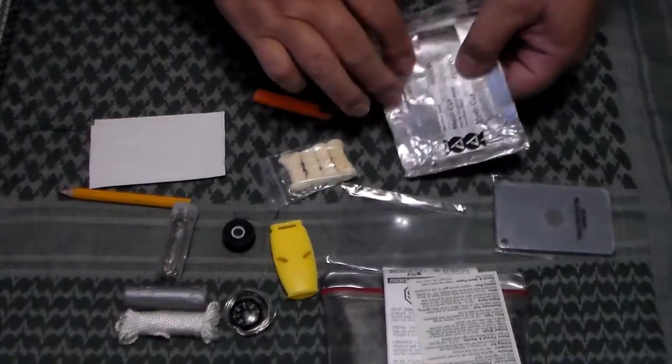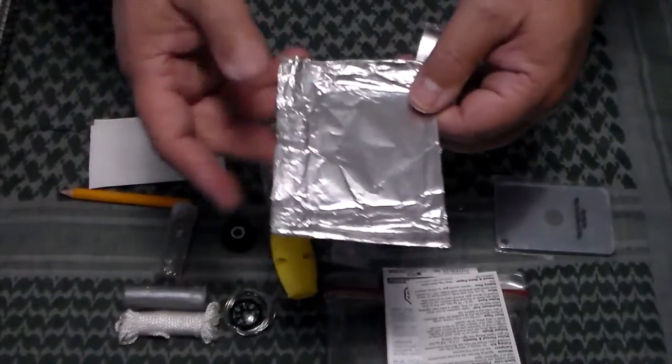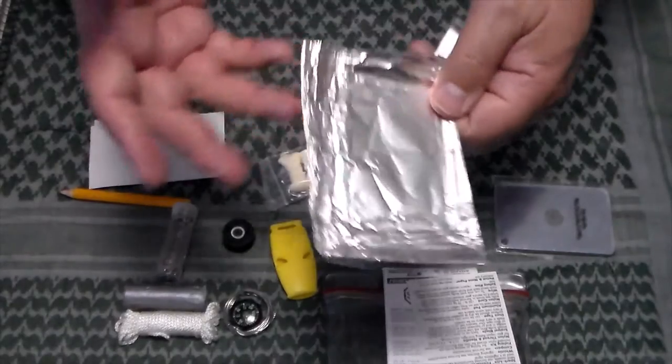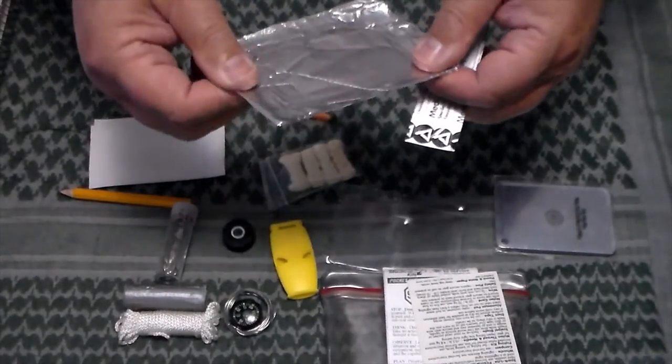And then you have a sheet of aluminum foil, heavy foil. You can make a drinking vessel out of it. A pot to boil some water with. And so on.